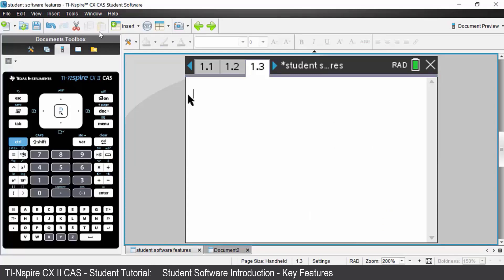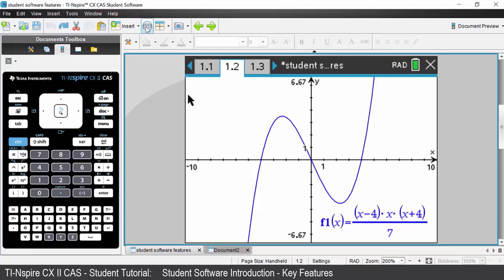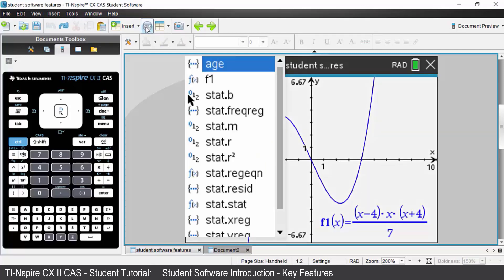I can undo that command by pressing the undo arrow. The next icon along, the var key, is the same as the one on your handheld keyboard. It gives you a list of all the variables that you currently have.